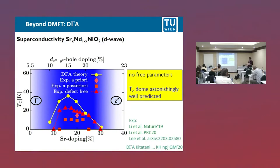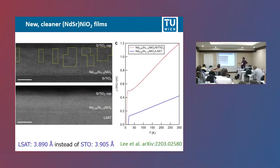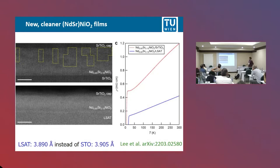Why are these films much better? The old films had Ruddlesden-Popper stacking faults with a lot of disorder. The new films don't have this disorder, and so the resistivity dropped by a factor of 3, and TC was also enhanced. These films are grown on LSAT instead of STO, but within 1% the lattice parameters are the same, and that is all that enters in our calculation.